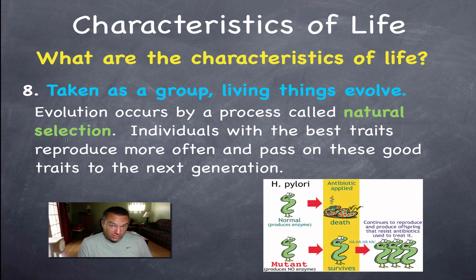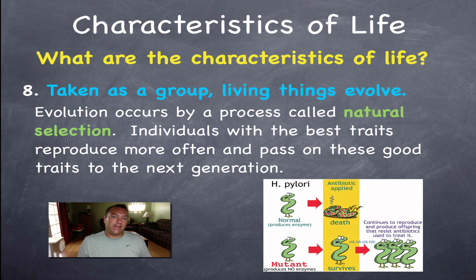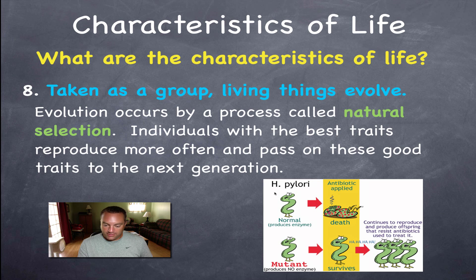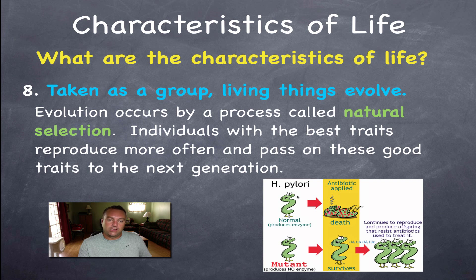An individual cannot evolve because they're given whatever genes they were born with. If an individual is lucky enough to have good genes, it can pass those on to the next generation, and the species as a whole benefits. Evolution is change over time through natural selection — nature selects which individuals get to pass their genes on.